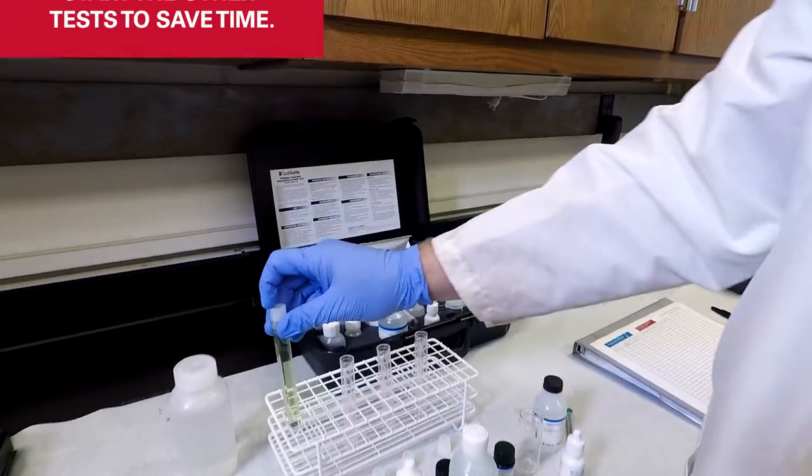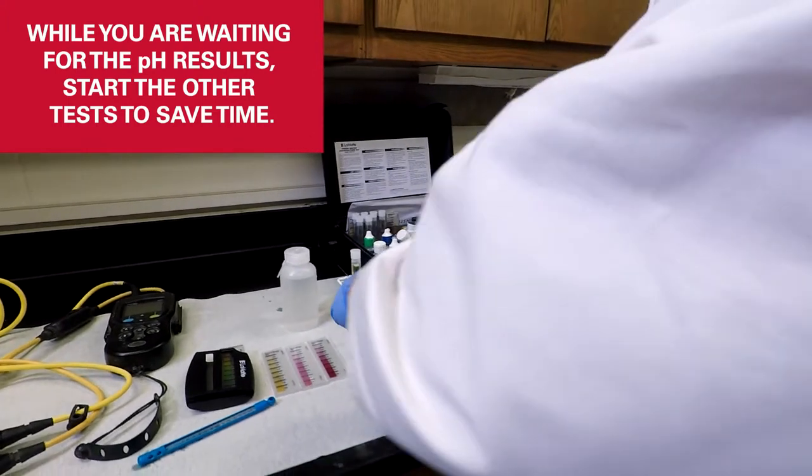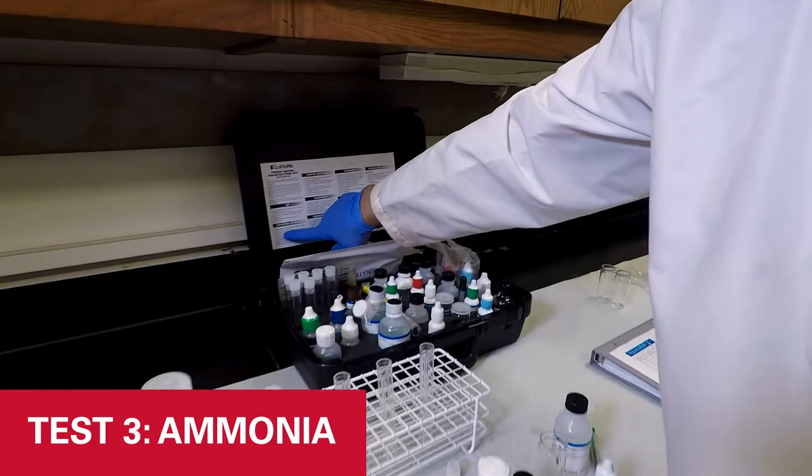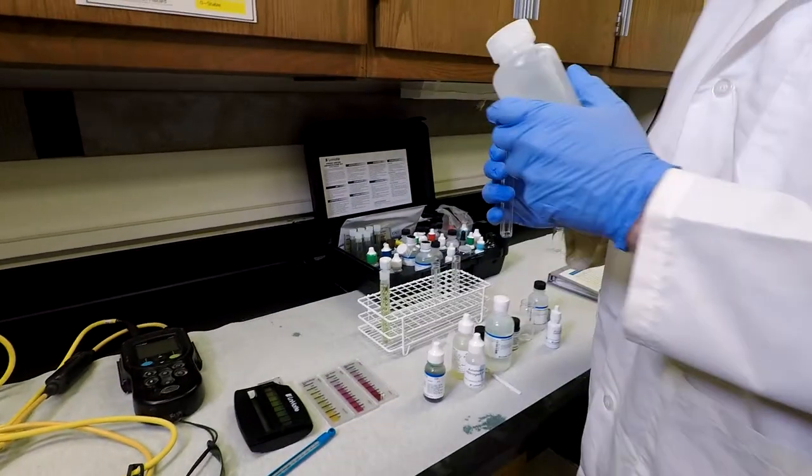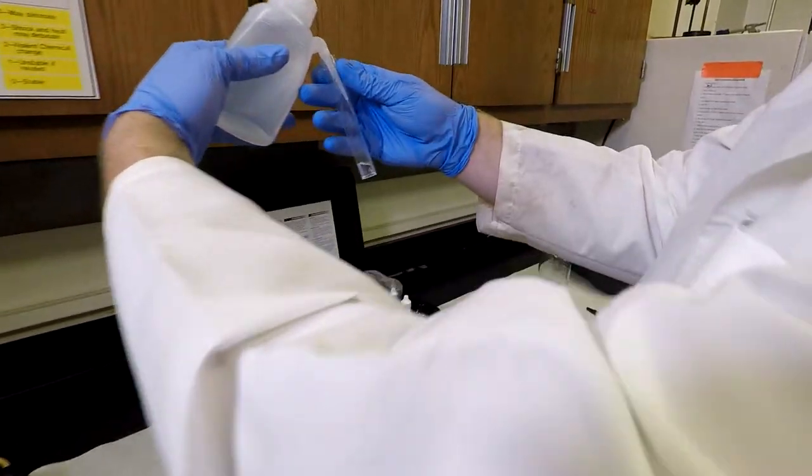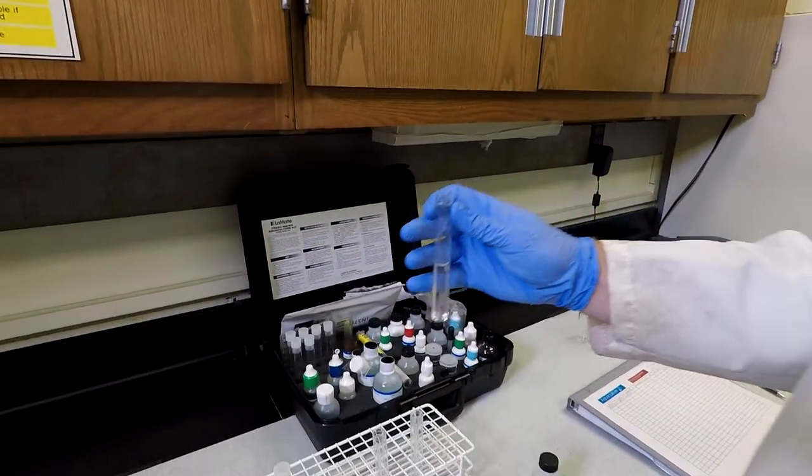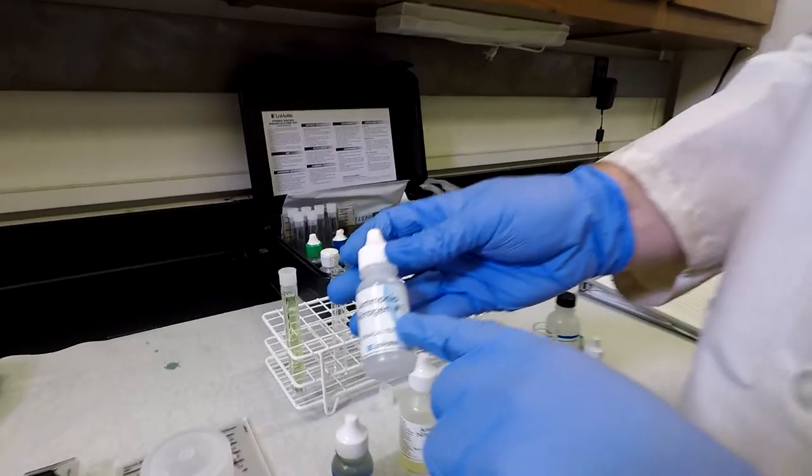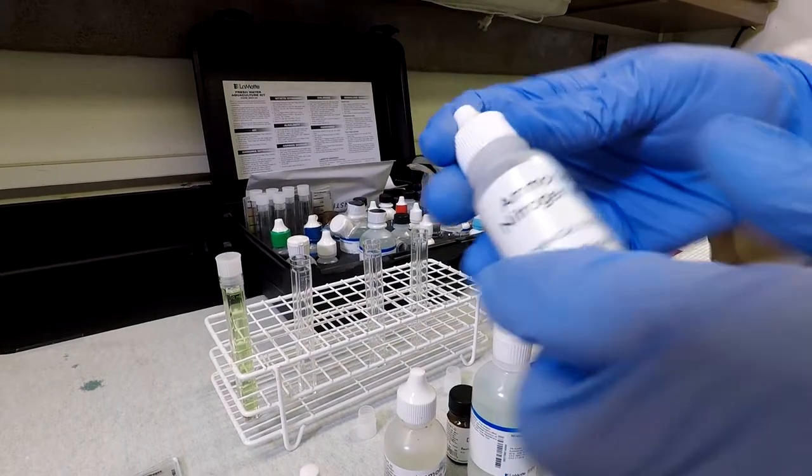Now I want to get my other tests started so that I'm being time efficient. So I can go ahead and start with ammonia next. Ammonia needs to add five milliliters of the sample into the test tube. I'm going to add up to the five milliliter line. And then I can set this into my rack. And then I'll start with ammonia reagent number one. I need to add four drops of this.